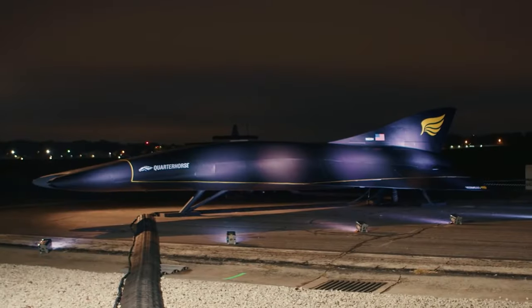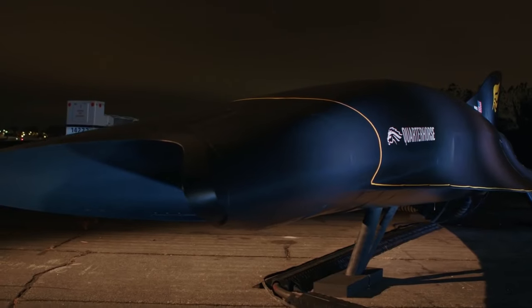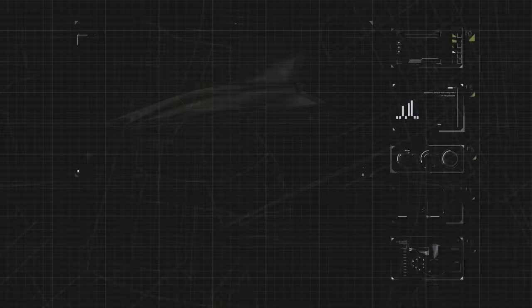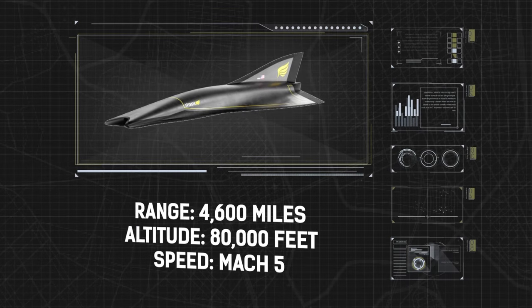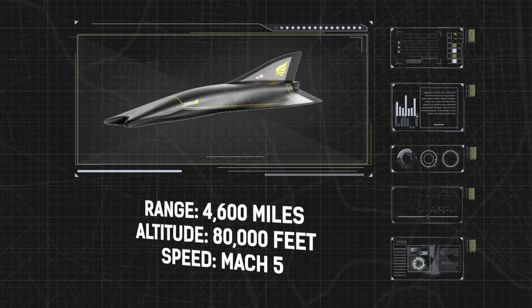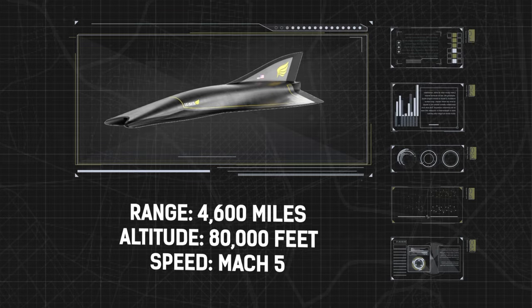The Quarter Horse is made of titanium alloy, so it can handle the stress of hypersonic speeds like a boss. It has a range of 4,600 miles and can fly at an altitude of 80,000 feet and reaches a top speed of Mach 5.